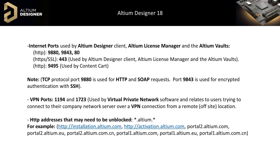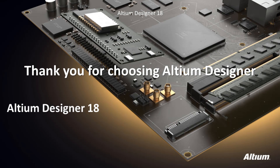HTTP addresses that contain Altium in the name may need to be unblocked. They can be targeted using wildcards at the beginning and end of the name Altium. For example, installation.altium.com, activation.altium.com, portal2.altium.com, portal2.altium.eu, portal2.altium.com.cn, portal1.altium.com, portal1.altium.eu, and portal1.altium.com.cn can all be unblocked using the above wildcard entry. Thank you for choosing Altium Designer.